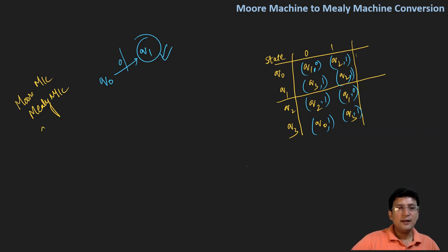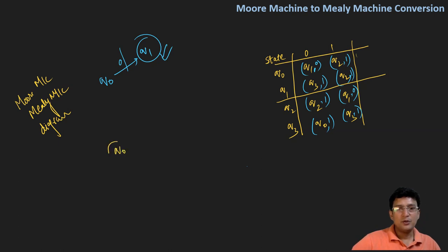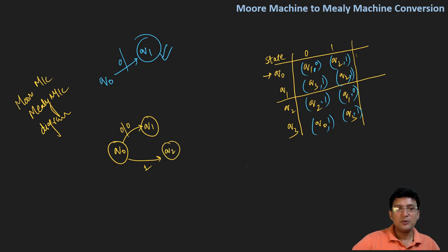You should also draw the state transition diagram for the Mealy machine. Q0 is the start state. On zero, q0 moves to q1 and the output associated with this is zero. On one, q0 moves to q2 and the output associated with this transition is one.